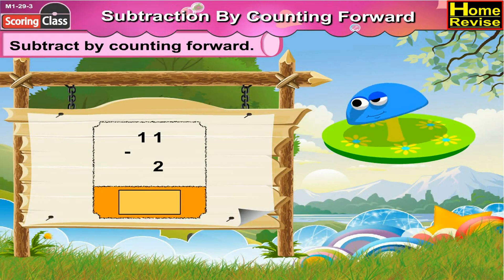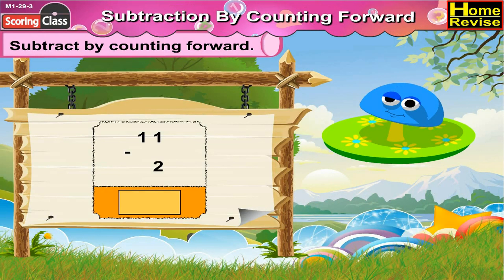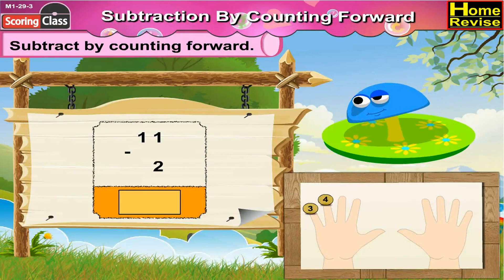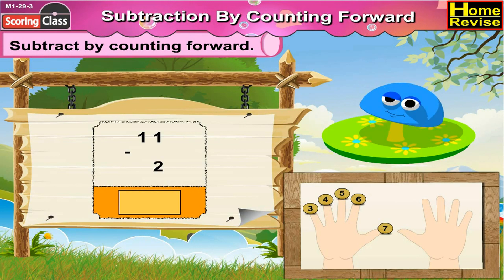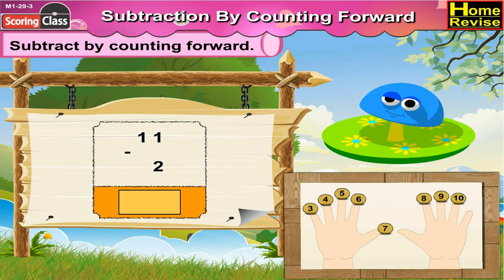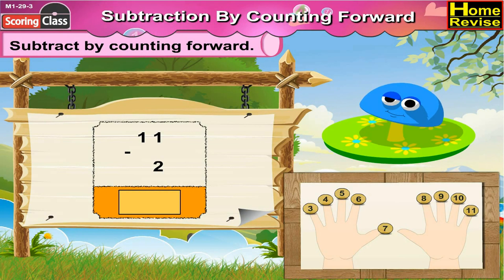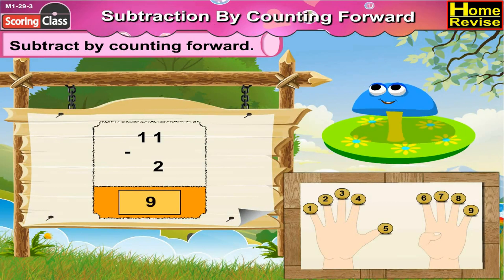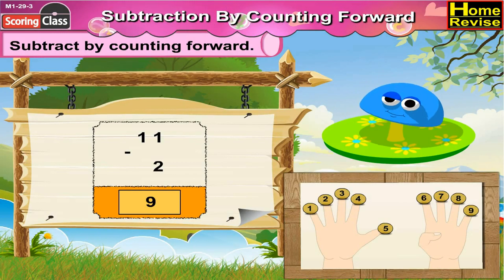11 minus 2 is equal to dash. Now by counting forward from 2: 3, 4, 5, 6, 7, 8, 9, 10, 11. That is 9 steps. So 11 minus 2 is 9.